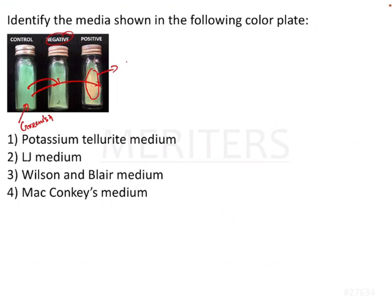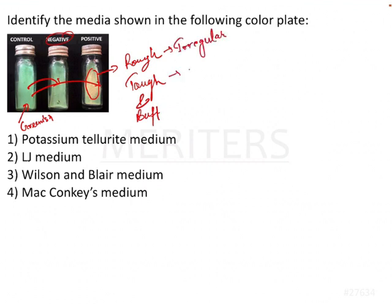These colonies are generally known as rough, tough, and buff colonies. They are called rough because these are irregular. They are called tough because they are difficult to lift. And they are called buff because these are pale yellow in color.